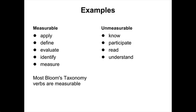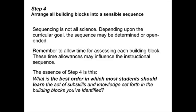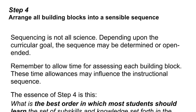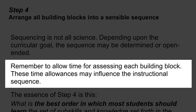The key thing is that most Bloom's taxonomy verbs are going to be measurable. Step 4 is to arrange all of this into a sensible sequence. The key thing here is allowing time for assessment. If something is going to take longer to assess, that might influence the order in which you place it in your instruction.